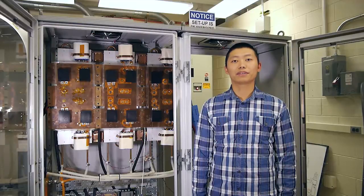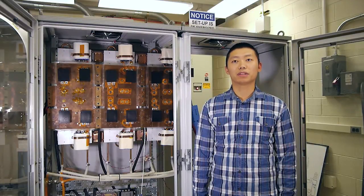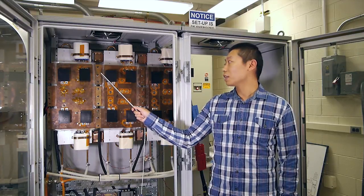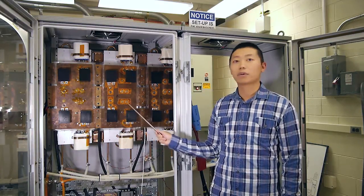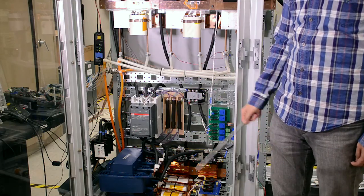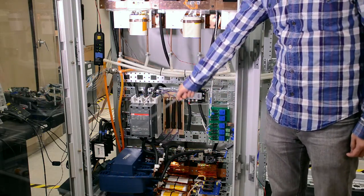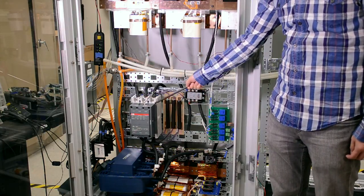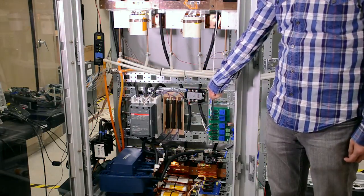The proposed modulation scheme is verified by an experiment on this 3-level neutral point clamp converter. Here, the power stage is consisted by this modularized building block. The grid interface is this LCL filter with the damping circuit, and also starting circuit and sensor board mounted on the power stage.